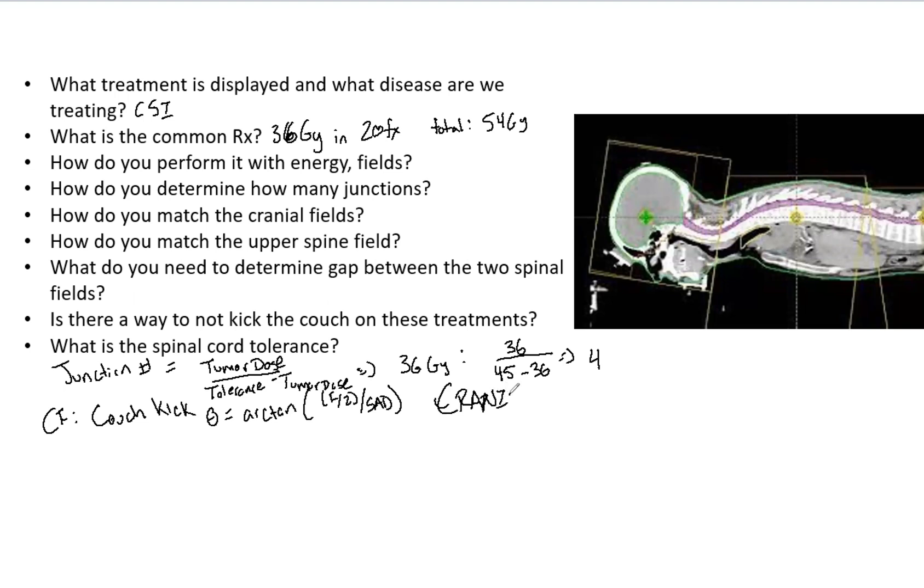For the spine fields, you typically use an SAD of 100. You want to consider the field size along the spine—how long this field is—and the SSD. Here you want to turn the collimator by an angle of theta equals arc tan. This is going to be L over two—that is the length of the upper spine field divided by the SAD, which again typically is 100.